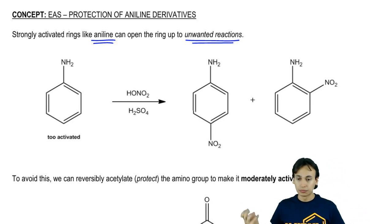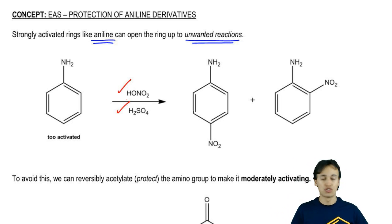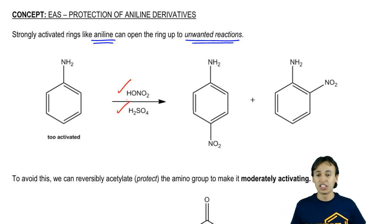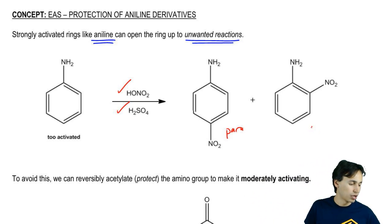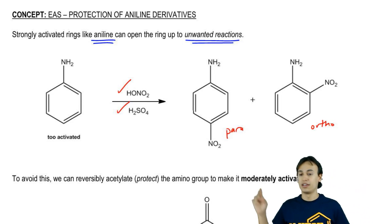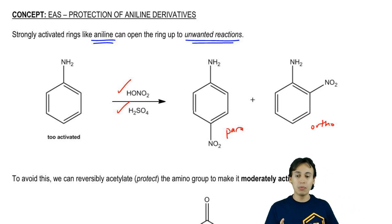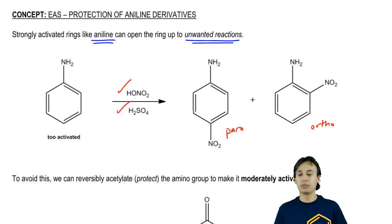Let's say you have your aniline and you're trying to do a nitration on it. You've got your nitric acid, your sulfuric acid, everything's going great. You're thinking you're going to get a mix of para and ortho products because aniline is an ortho/para director, so you wouldn't expect much meta product. But we've got a problem — aniline is so active that we're going to get some poly-substitution, meaning multiple reactions taking place.